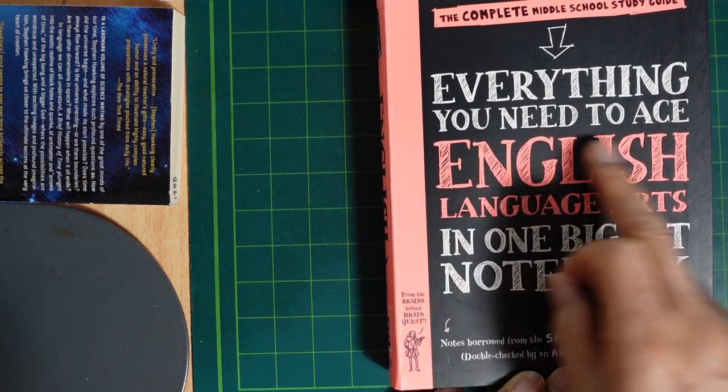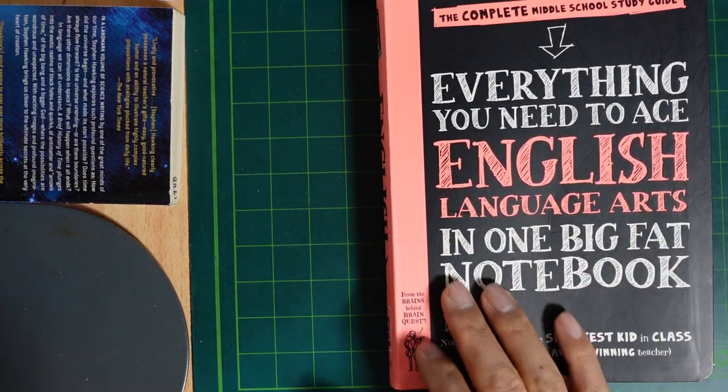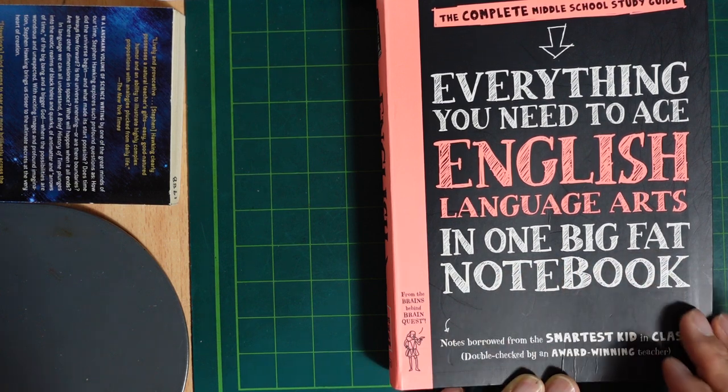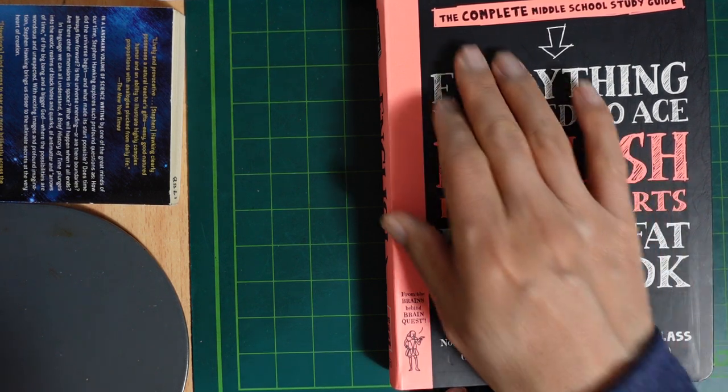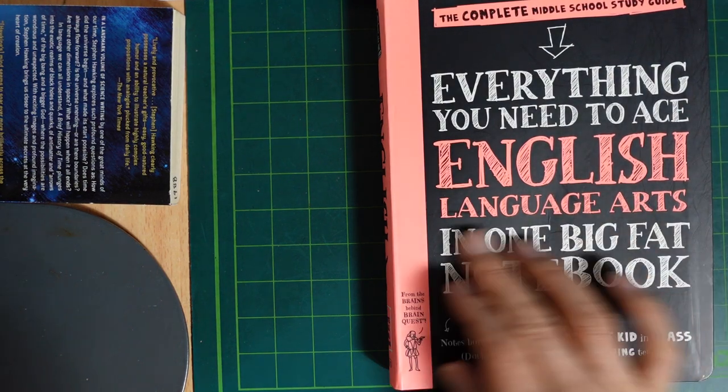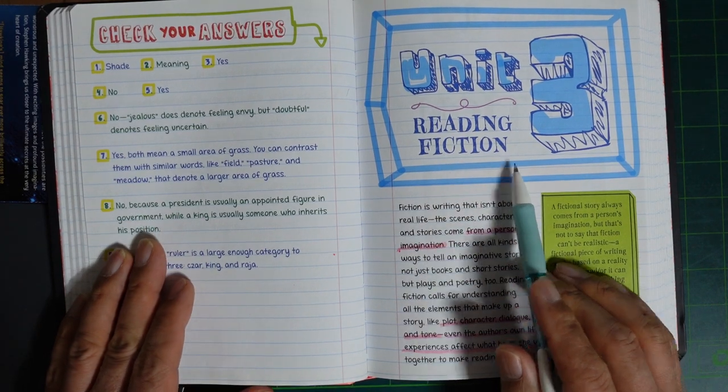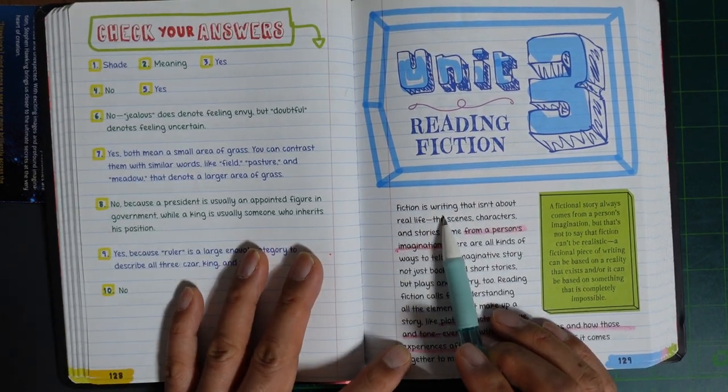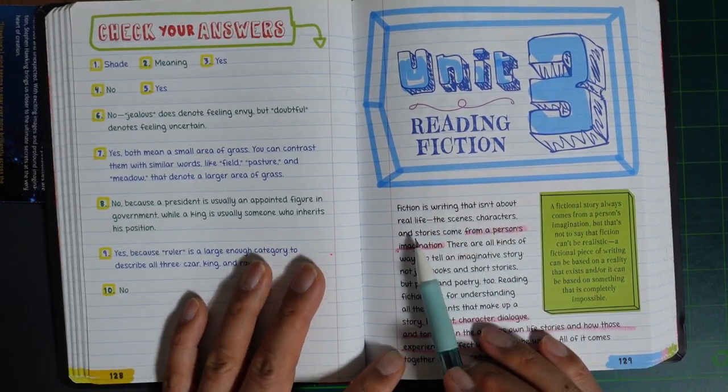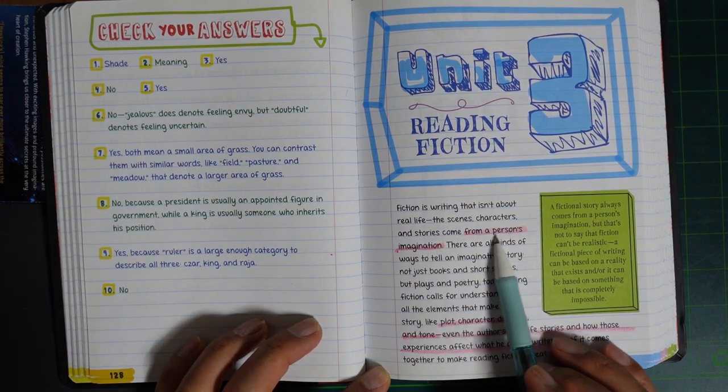Everything you need to ace English language arts in one big fat notebook. The complete middle school study guide. English language arts, Unit 3: Reading Fiction. Fiction writing that isn't about real life. The senses, characters, and stories come from a person's imagination.